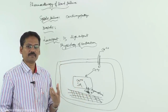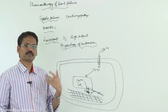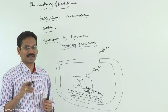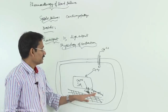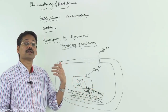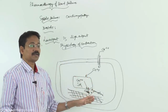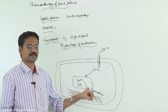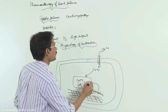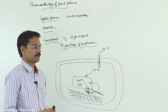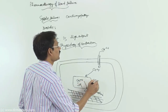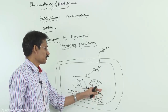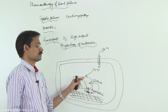Once contraction is over, blood is pumped into the respective compartments from atria and ventricles. For the heart to relax, intracytoplasmic calcium levels must be brought down to normal. The calcium goes back to the sarcoplasmic reticulum via the sarcoplasmic endoplasmic reticulum calcium ATPase (SERCA), a pump that sequesters intracytoplasmic calcium back to the SR.